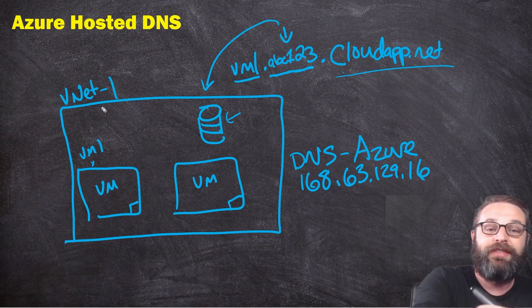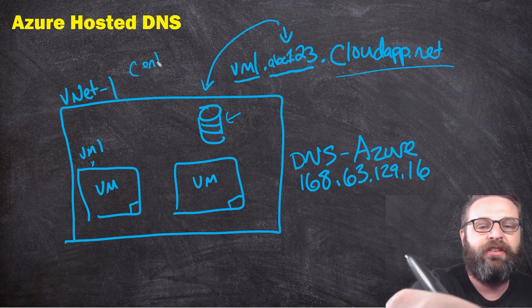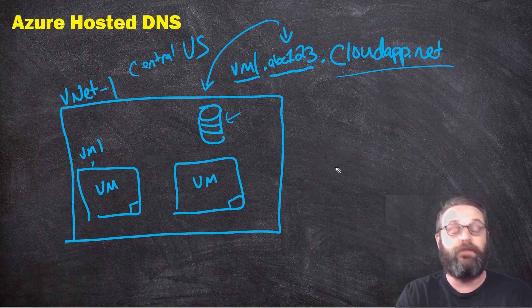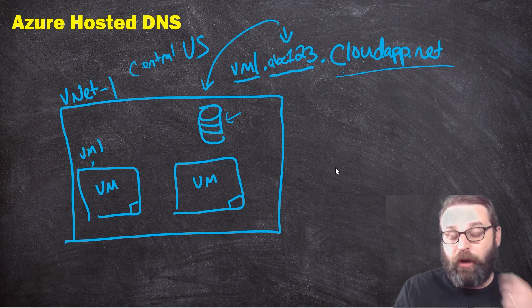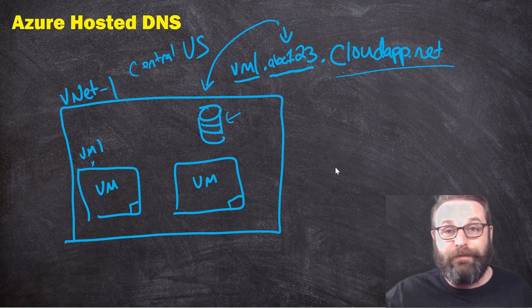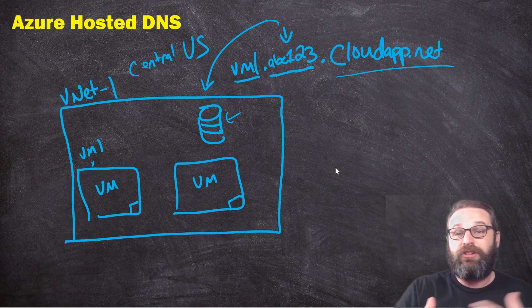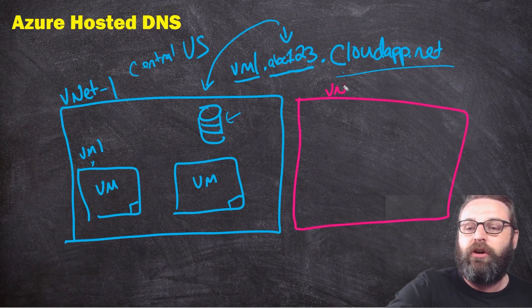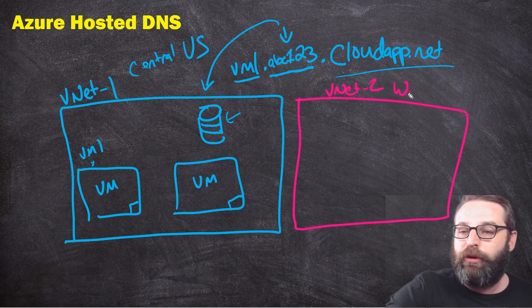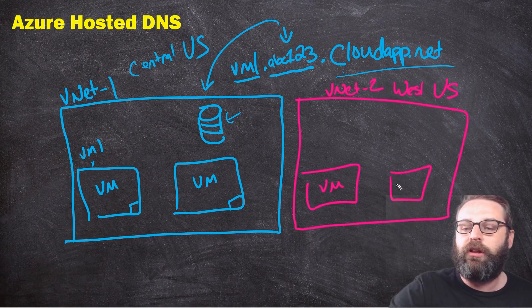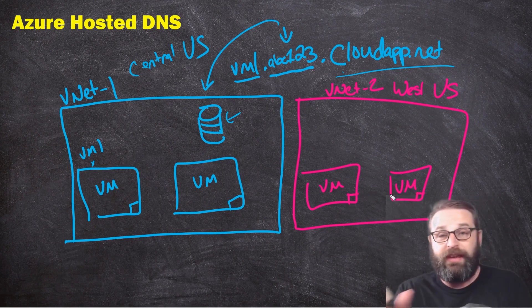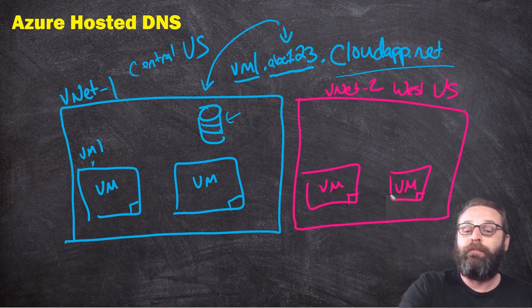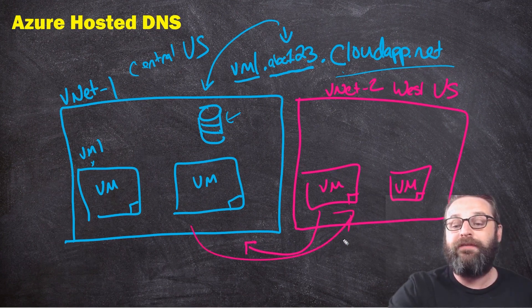But there is a little gotcha. When I deploy VNet1 in Central US and deploy all my resources like VMs and SQL databases, all of those resources by default can resolve each other with no problem. They can do an NSLOOKUP for a neighbor like VM2, and it'll automatically know the domain to append - the cloudapp.net domain - and has no problem looking it up. But if I deploy a second VNet, let's call it VNet2 in West US, and deploy VM3 and VM4 there - those VMs in VNet2 have the exact same DNS server (168.63.129.16) and can resolve each other, but they cannot resolve VMs from one VNet to the other.